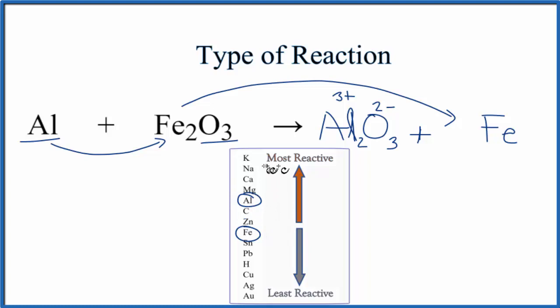Because aluminum is higher up, it's more reactive. And that means it's going to be able to replace the iron here in this single displacement reaction. So this reaction does take place as written.